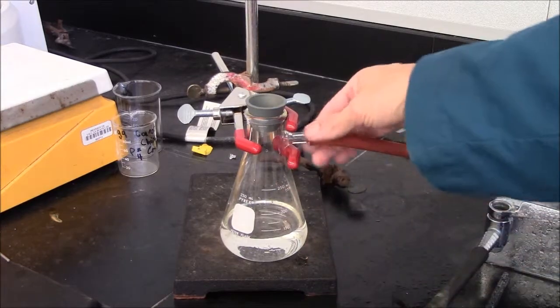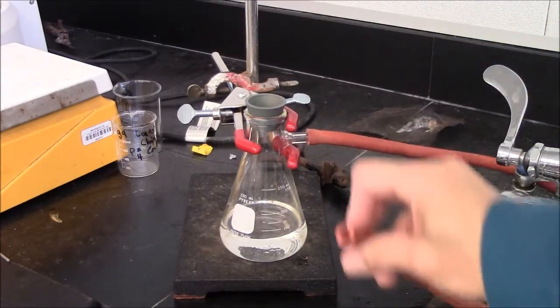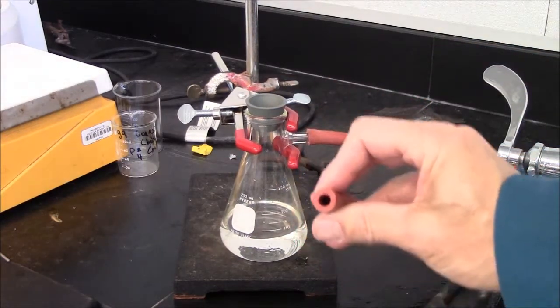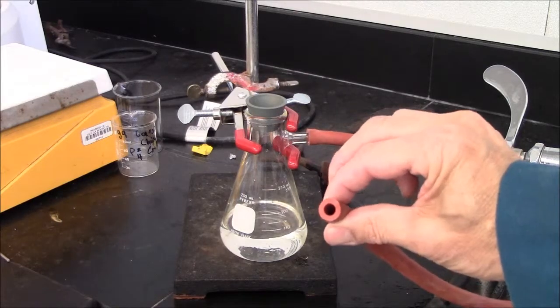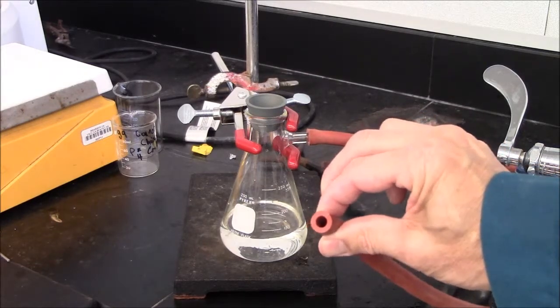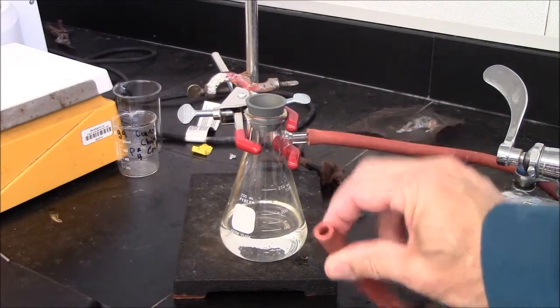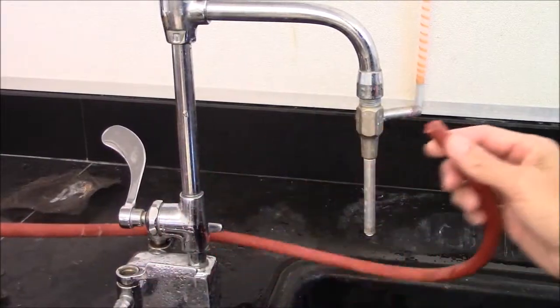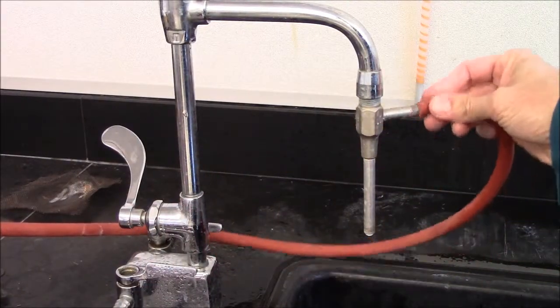This is a vacuum flask. It has a side arm. You need to attach vacuum tubing. This is thick wall tubing that will not collapse when pressed on by atmospheric pressure. The end of the vacuum tubing attaches to the aspirator here.